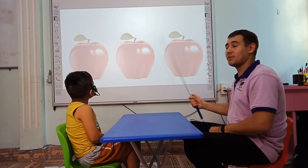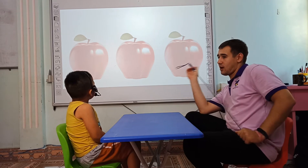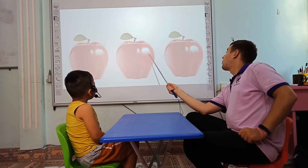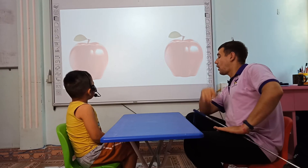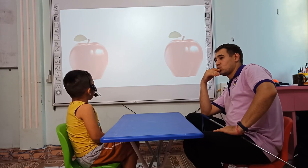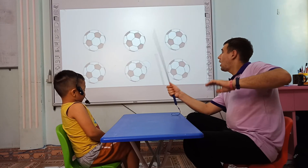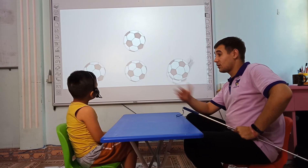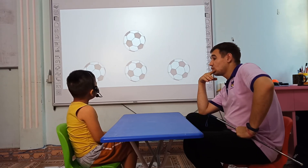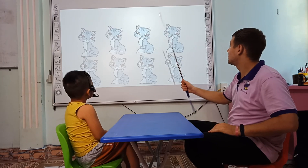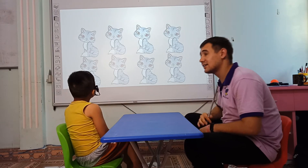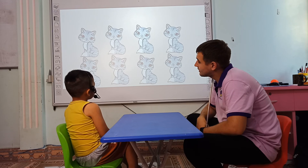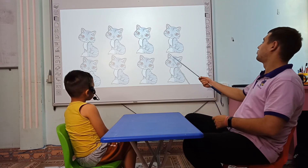How many apples do you see? I see 3 apples. Cool. How many apples now? I see 2 apples. Very good. How many apples? I see 4 apples. Very good. How many cats? I see 8 cats. Very good.